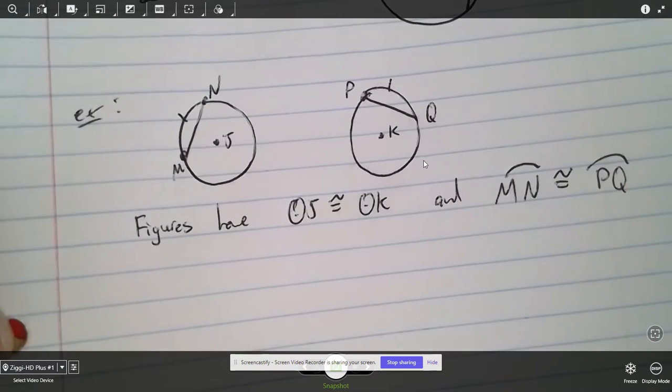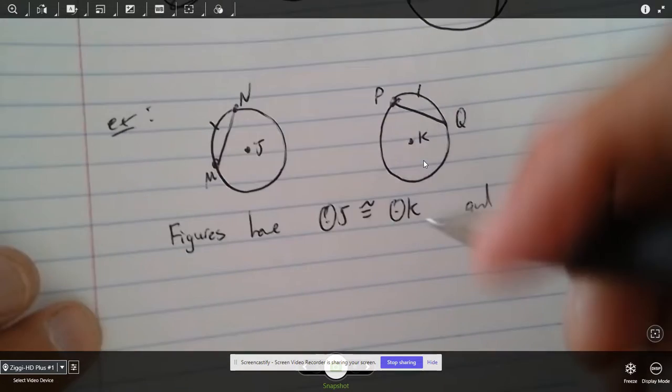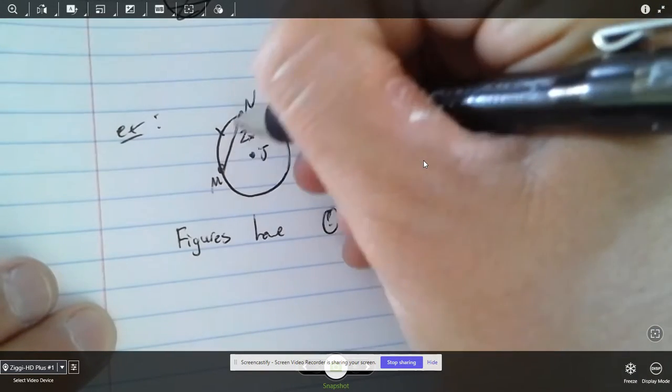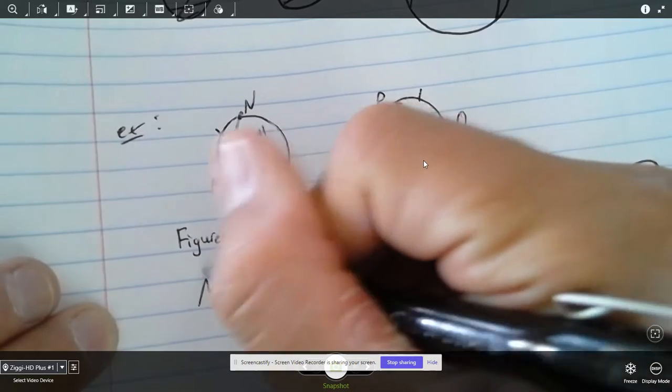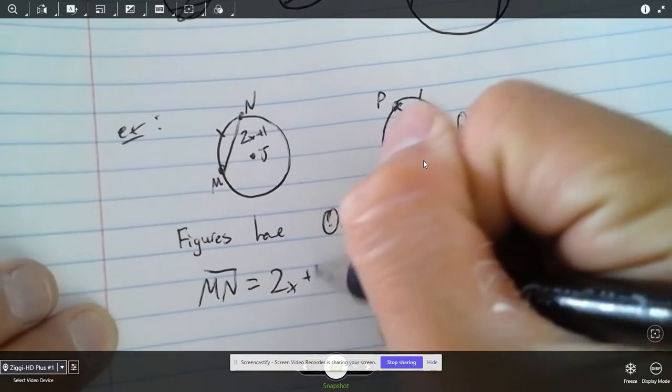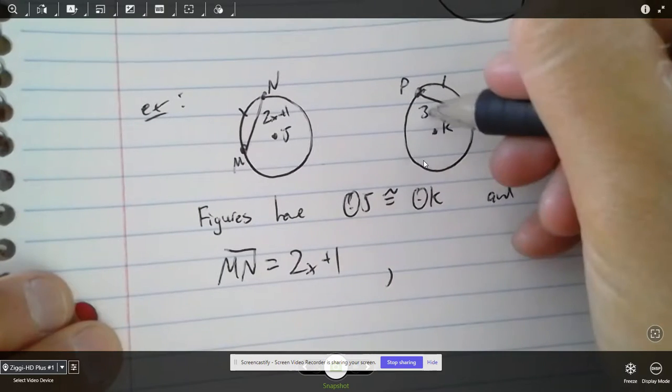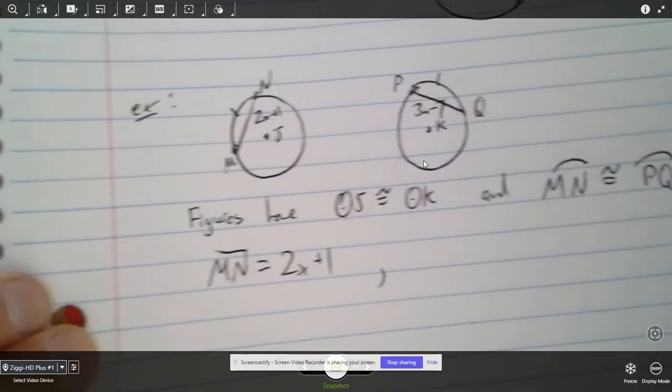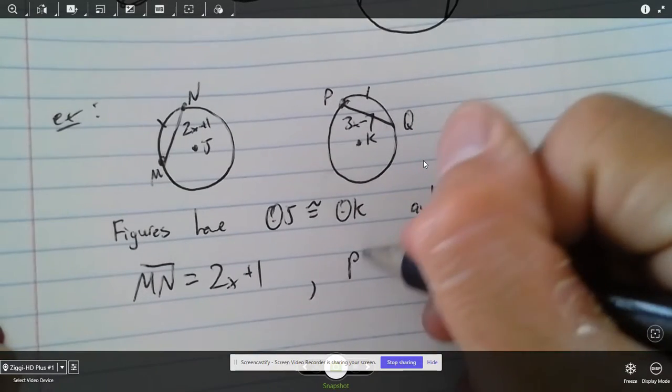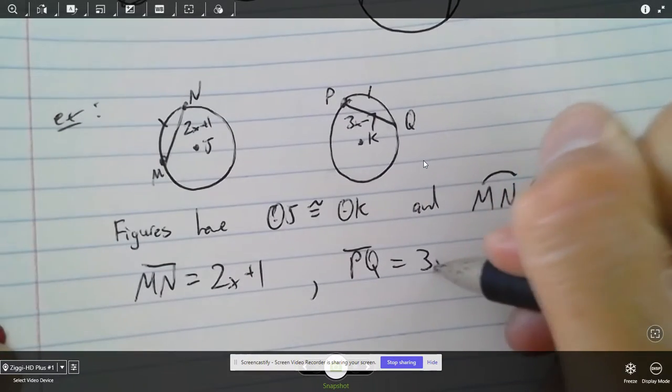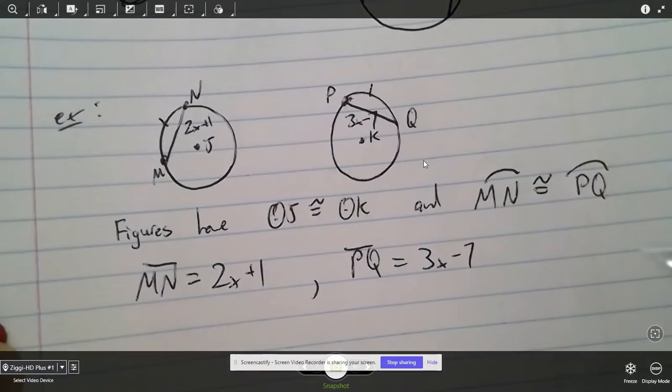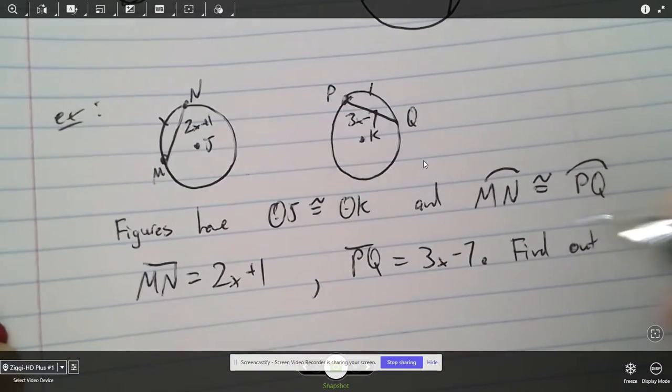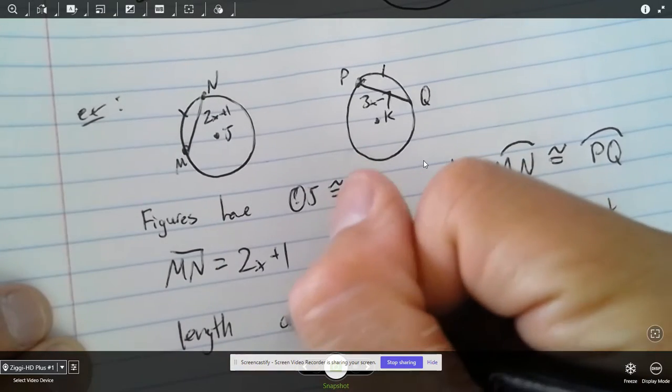And we also know that MN, so this is MN, sorry about that, didn't name them, that's MN, and this is PQ. We know that the only thing that's given to you is MN, the arc, is congruent to the PQ arc. This line segment MN is equal to 2X plus 1, and PQ is equal to 3X minus 7. Now we have to find out the actual length of PQ.